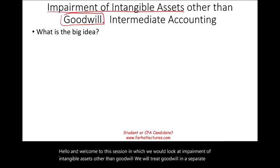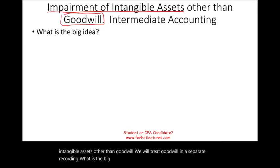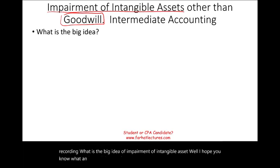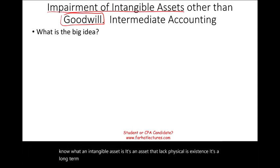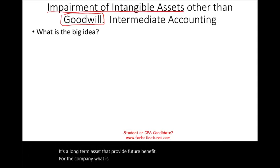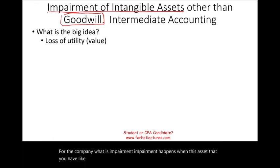What is the big idea of impairment of intangible assets? An intangible asset lacks physical existence — it's a long-term asset that provides future benefit for the company. Impairment happens when an asset like a patent, a copyright, trademark, or trade name loses utility and lost value for many reasons.